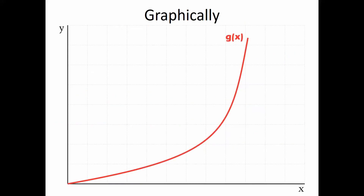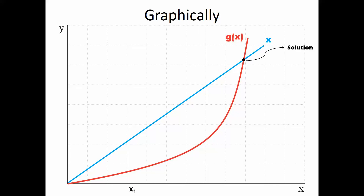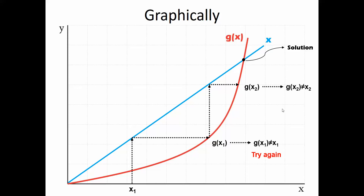How does the method work graphically? If you have the function g(x) and also the line y = x — a straight line with slope one — then since x = g(x), the solution is the intersection. To reach it, you start by assuming a value of x, compute g(x), and check if g(x) equals x. You won't get it the first time, so you repeat: the new x becomes the previous g(x), and you go again and again until convergence.